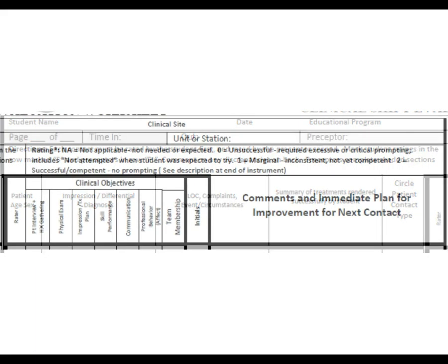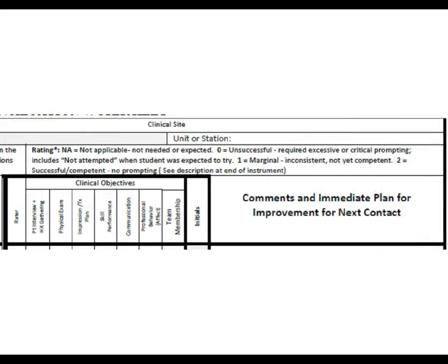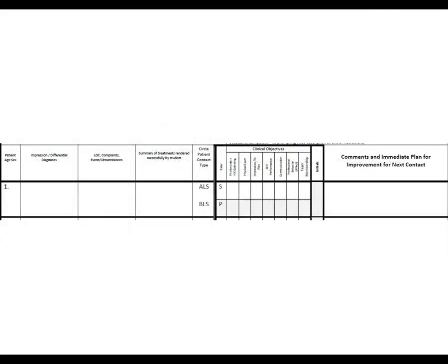If there are significant difficulties with a patient, comments and an immediate plan for improvement for the next contact should go in the far right-hand column. If more space is needed, additional space is provided on the back of the form. This covers one complete patient row — age, sex, and then across the page for each significant patient contact.